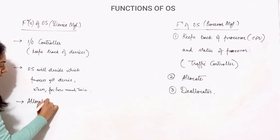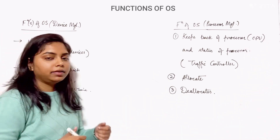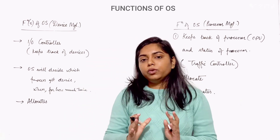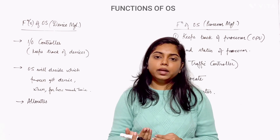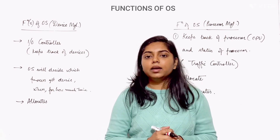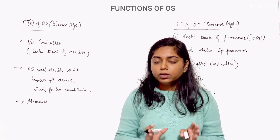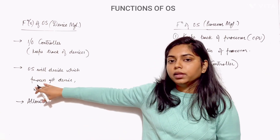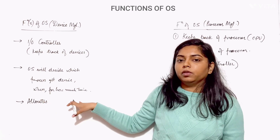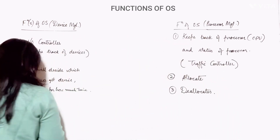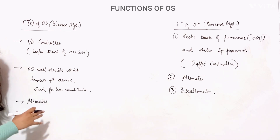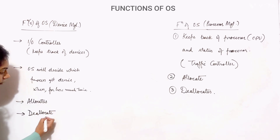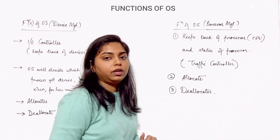The OS allocates devices in an efficient manner. For example, in multi-programming, if two processes both request a printer at the same time, OS will decide which process gets the device, when, and for how much time. When the request is completed or the process has terminated, OS will deallocate the device. These are the functions of OS in case of device management.